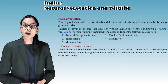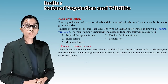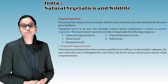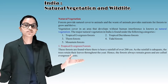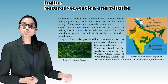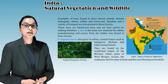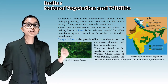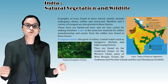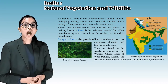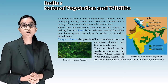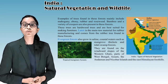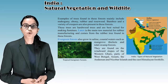The first is tropical evergreen forest. These forests are found where there is heavy rainfall of over 200 centimeters. As the rainfall is adequate, the trees retain their leaves throughout the year, hence the forests always remain green. Examples of trees found include mahogany, ebony, rubber, and rosewood. Bamboo and a variety of creepers are also present. These are hardwood trees best suited for making furniture. Latex is the main raw material for rubber manufacturing and comes from the rubber tree found in these forests.